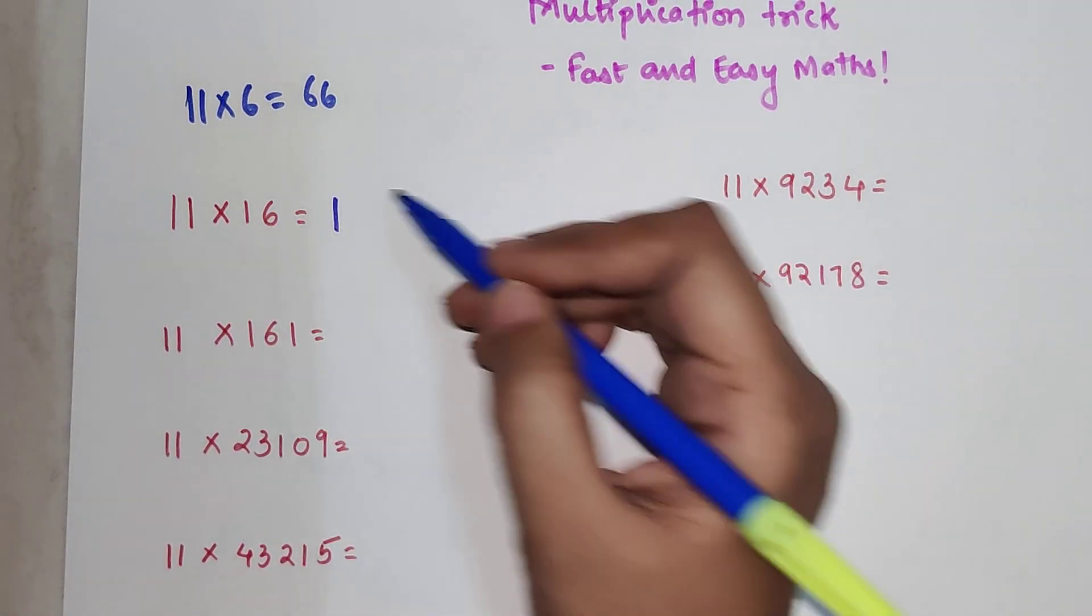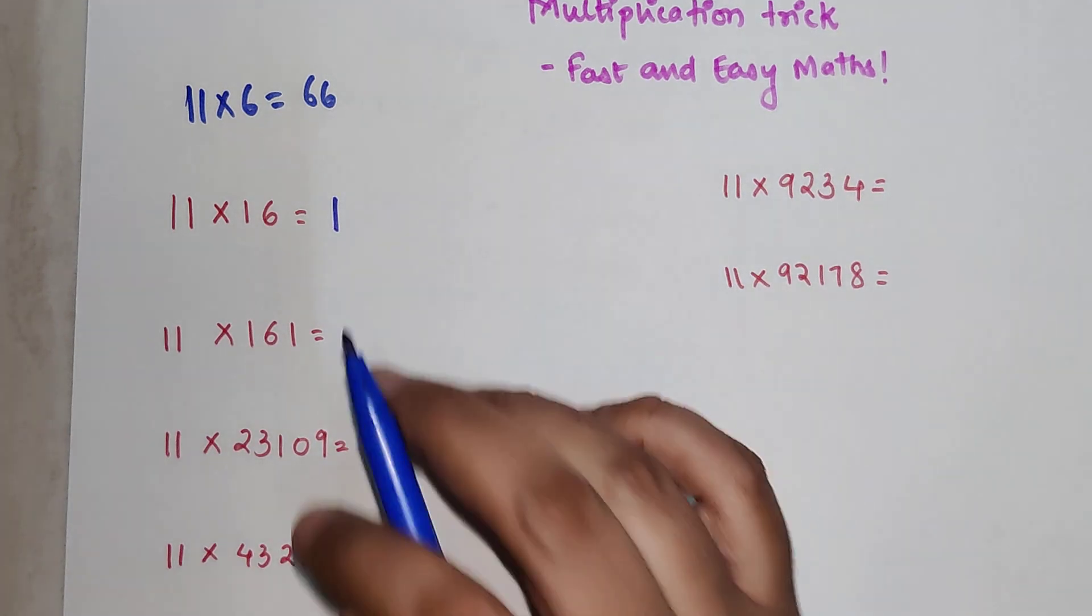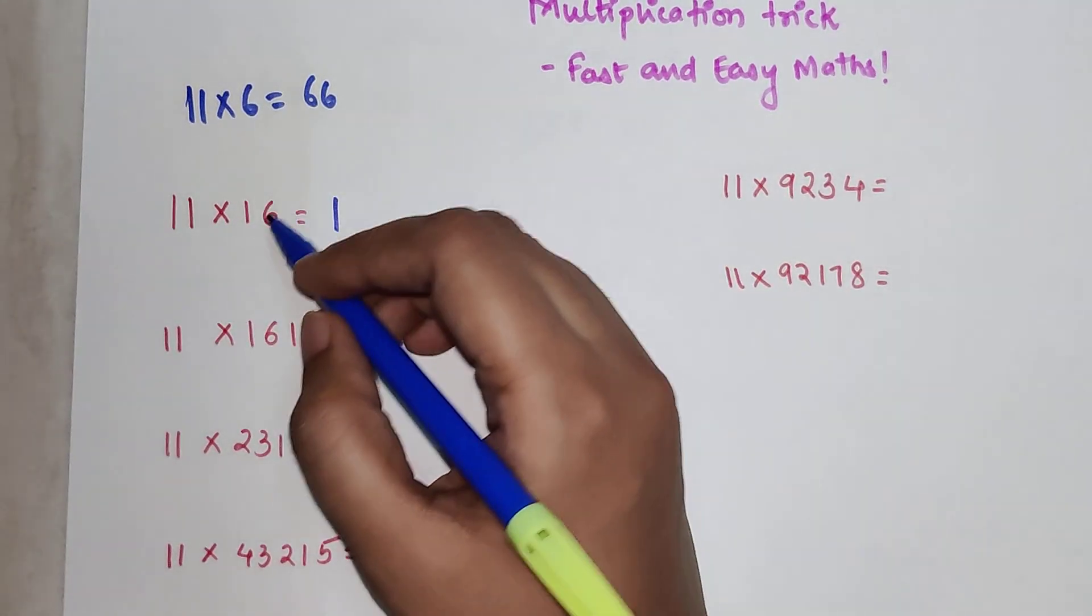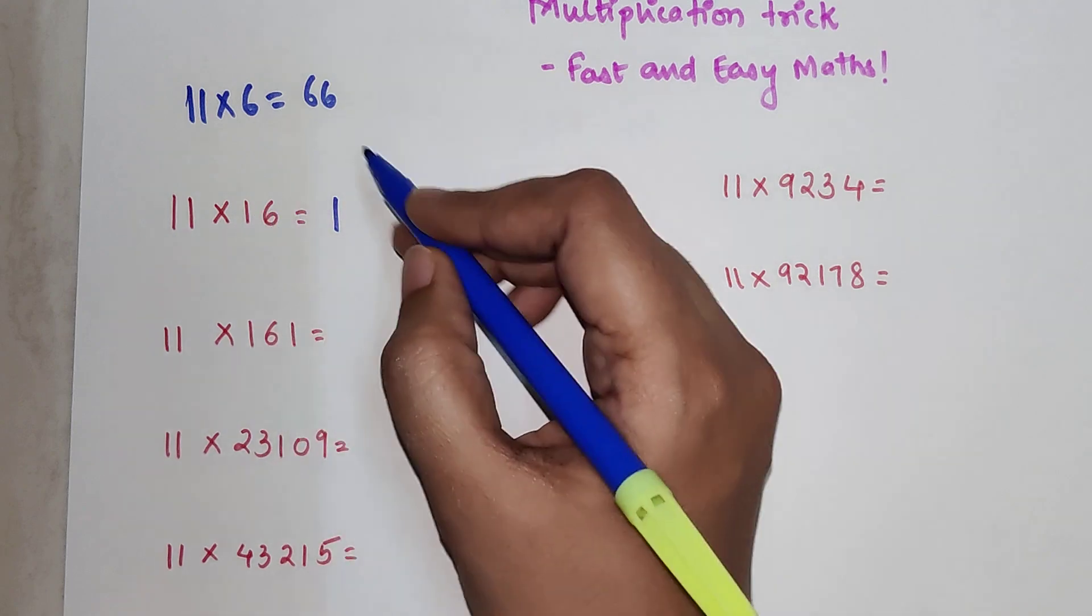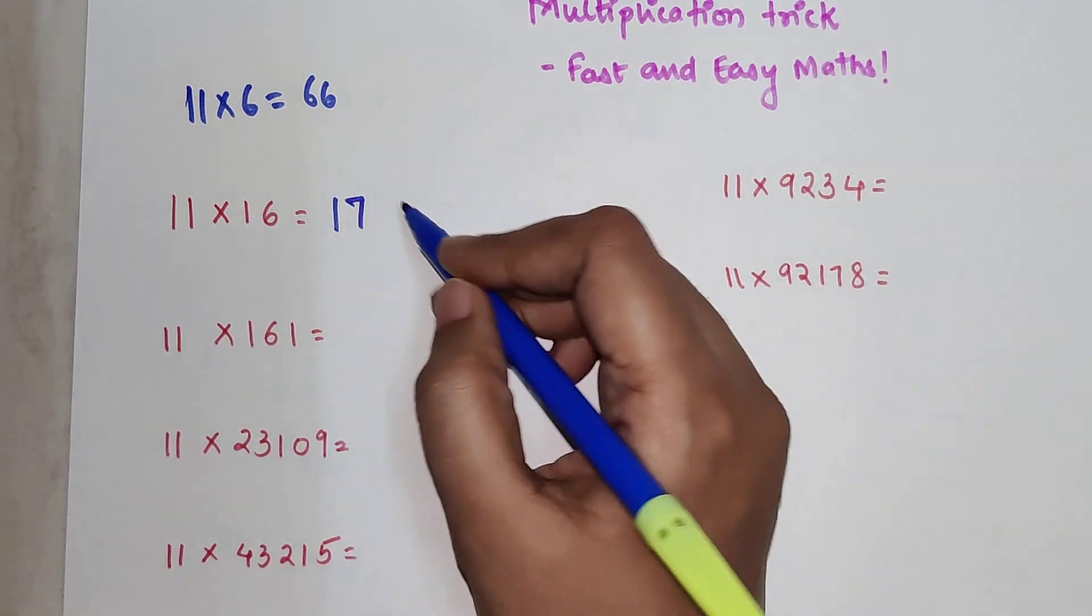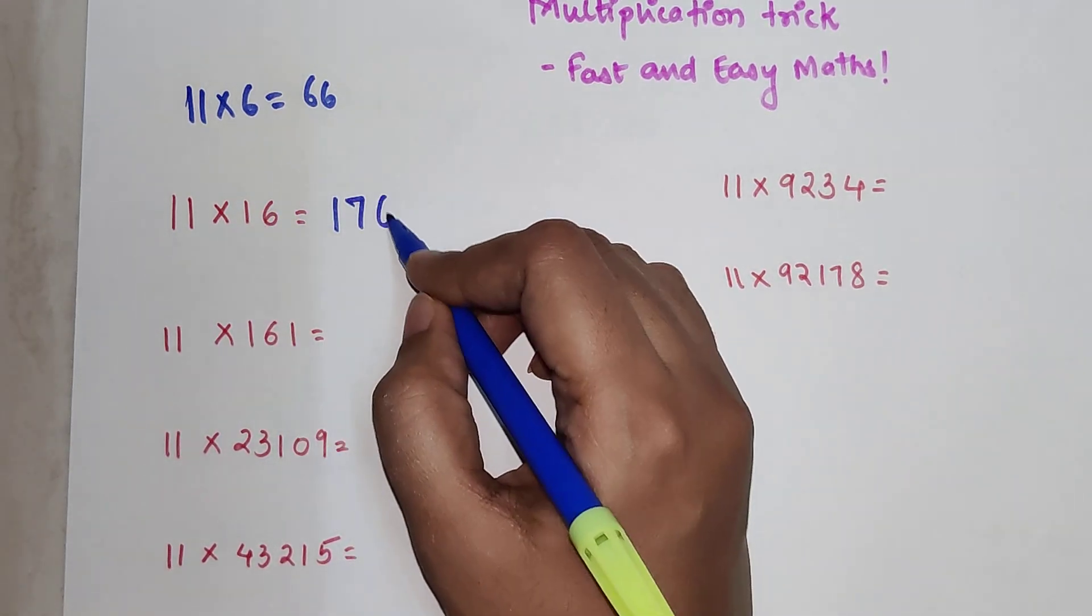The next one would be what? You add 1 plus 6, that is 7, and the last digit would be the last digit itself. So the answer for 11 into 16 is 176.